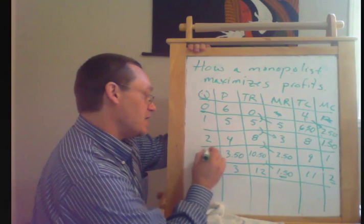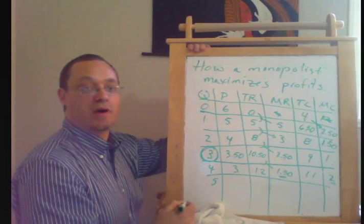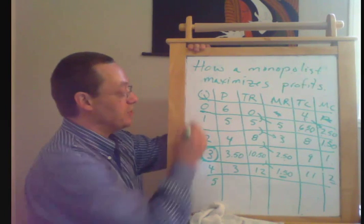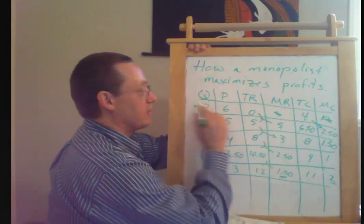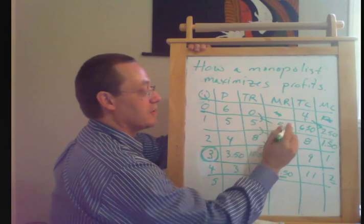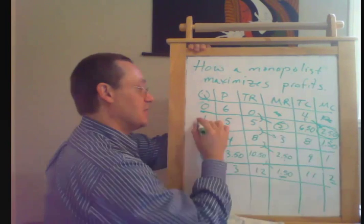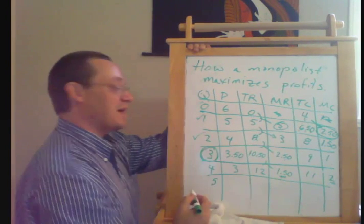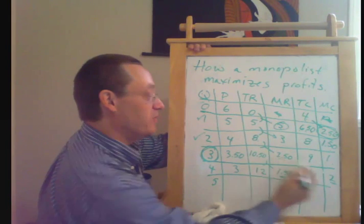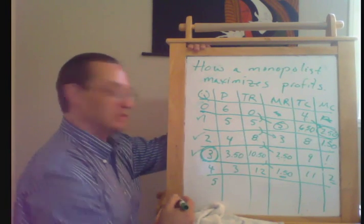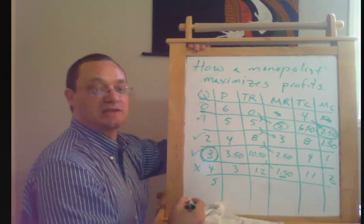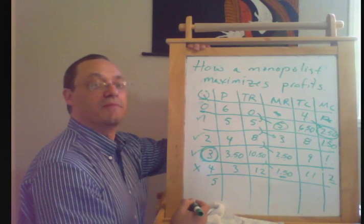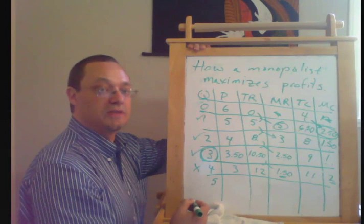So here is our profit maximizing quantity. Again, just like with perfect competition, to maximize profits, we want to produce all the units that have marginal revenue greater than marginal cost. So the first unit passes that test. The second unit passes the test. The third unit, $2.50 is more than $1.00, so it passes the test. The fourth unit does not pass the test. So that's how we're going to maximize profits. Produce all the units of Q that have marginal revenue greater than marginal cost, just like with perfect competition.